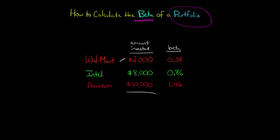So if we add up the $2,000, the $8,000, and the $10,000, that gives us a total of $20,000. And now that we know you have a total of $20,000 invested, we can go and calculate the weighted average as follows. So Walmart is 2,000 of the entire 20,000, so 2,000 out of 20,000 is the same as 2 over 20, so we're going to multiply that by Walmart's beta, which is 0.38.